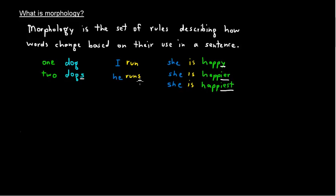So, those are all examples of rules of morphology. Now, the bad news is that not all words follow the rules. Words that follow the rules are regular.